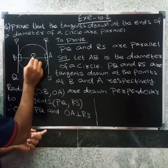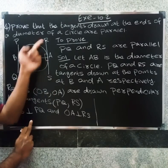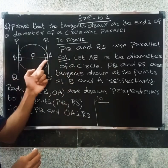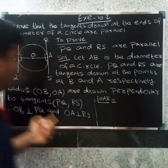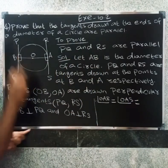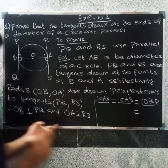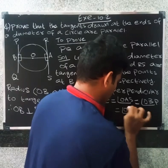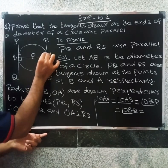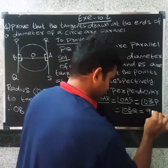Since radius is perpendicular to the tangent, the angles will be 90 degrees. OB is perpendicular to PQ and OA is perpendicular to RS. So angle OBP and angle OBQ are each equal to 90 degrees.